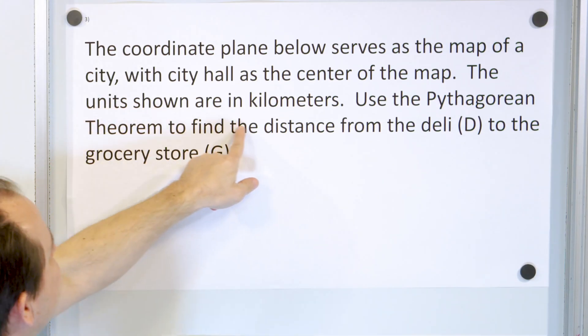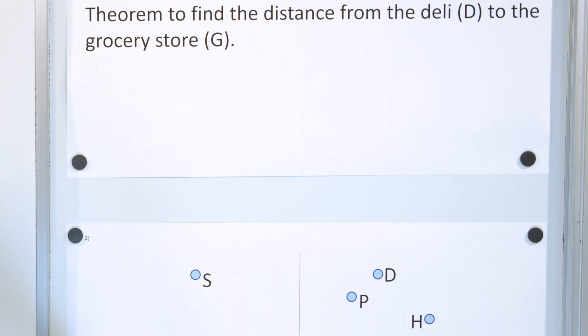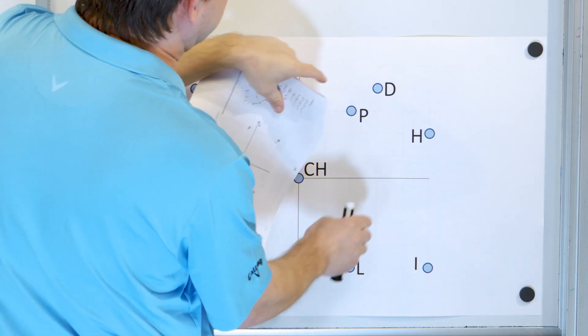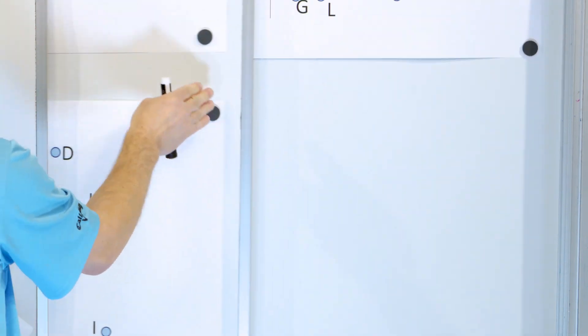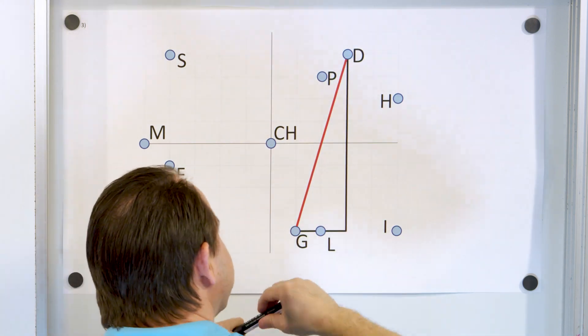And here is our last problem. We're trying to find the distance between the deli D and the grocery store G. Deli to the grocery store. So this straight line distance, let's draw that distance here. It's from the deli to the grocery store. We can form a right triangle, of course, right here.